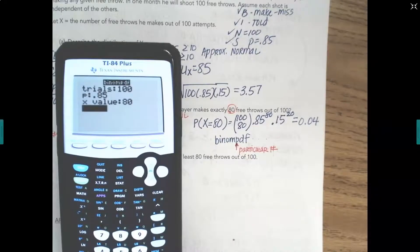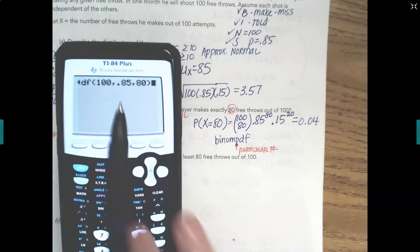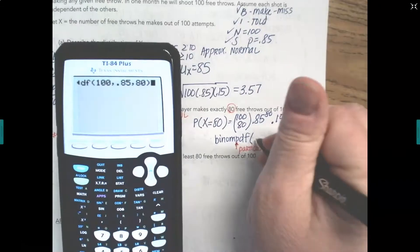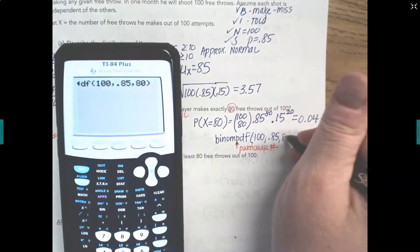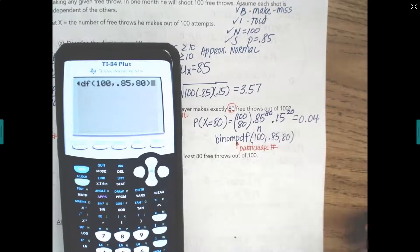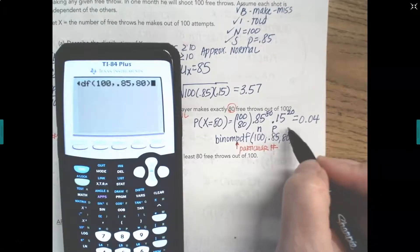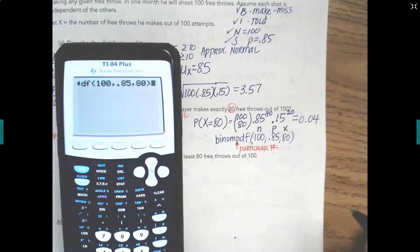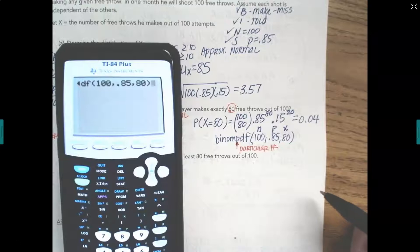If your calculator doesn't prompt you like mine does, you're going to have to remember the order that these items get put in. Know your own calculator. And so this is what it's going to look like. So we're going to write it down, 100, .85, 80. The 100, remember, was the number of trials, .85 was the probability of success, and 80 was the particular x value that we were looking for. You have to label these to get full credit on the AP exam.